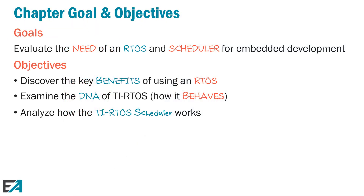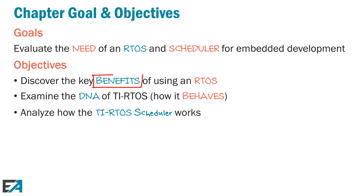So what's the goal of this chapter? We're going to take a look at why someone would need an RTOS versus not using an RTOS. Honestly, any program that you write doesn't have to use an RTOS. We're going to investigate what kind of services an RTOS provides that assist the embedded developer. The objectives include looking at the benefits of an RTOS — that would be a value proposition for why use an RTOS versus traditional embedded topology.